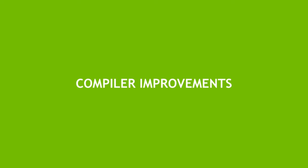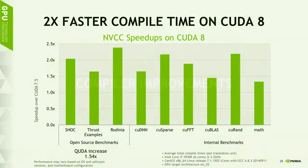I also want to briefly mention compiler improvements. First, the compiler is faster. In CUDA 8, the NVCC compiler team has spent a lot of effort optimizing compile time — how long you wait for your program to compile. They're seeing speedups averaging around 2x, ranging from 1.5x up to 2.5x across a variety of codes. The types of codes that benefit most are C++ template-heavy codes, such as Thrust or the Eigen library.